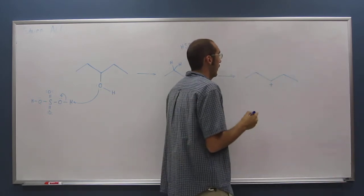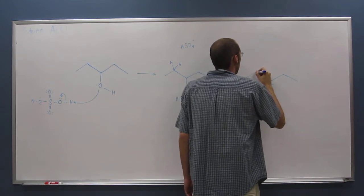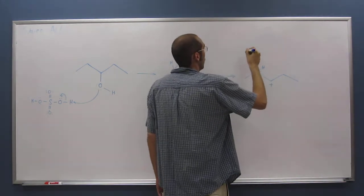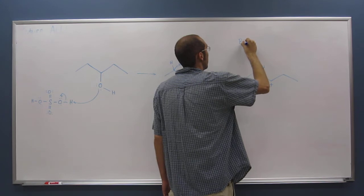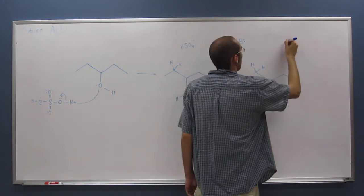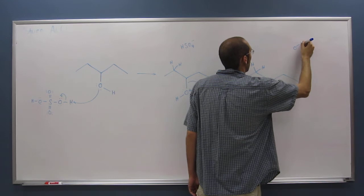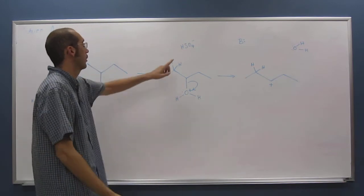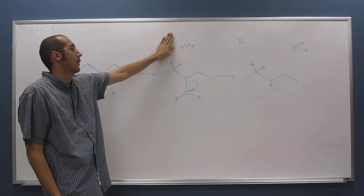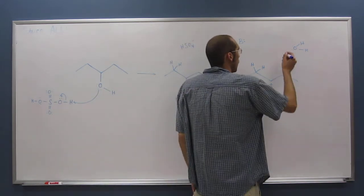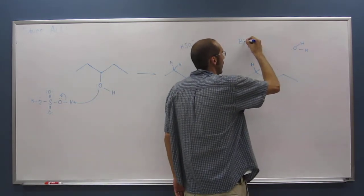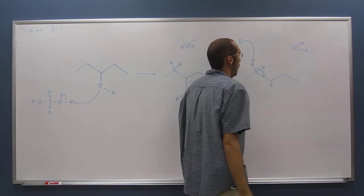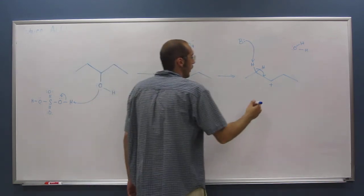So when we make that carbocation there, the base here could be the newly formed water molecule, it could be the conjugate base of sulfuric acid, could be either one. But let's just say general base will come in and deprotonate, like that, making your double bond.